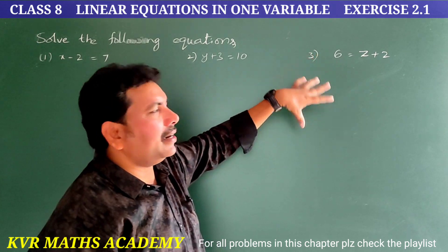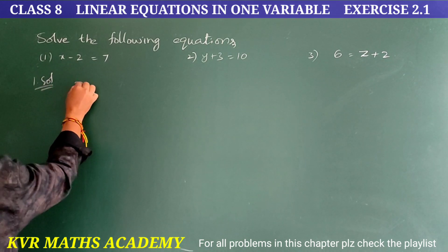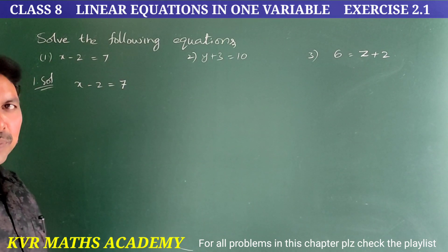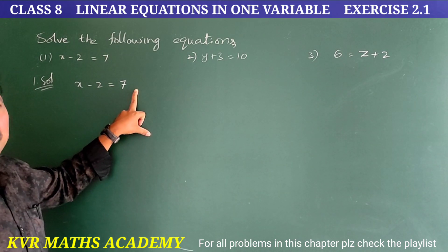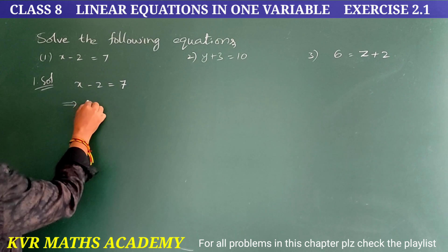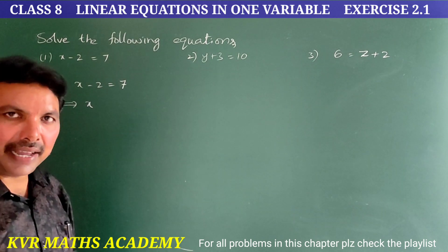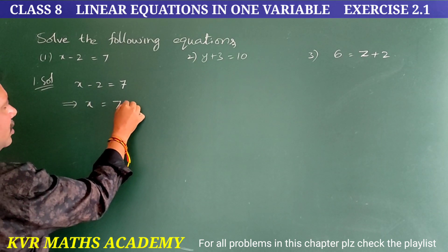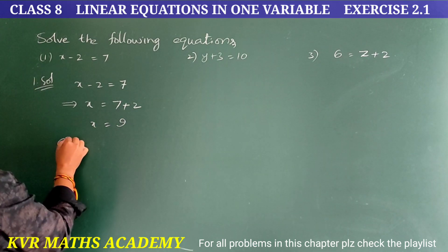First solution. Given: x minus 2 is equal to 7. We'll do these problems by the transposing method. If you transfer minus 2 to the other side, it becomes plus 2. So x is equal to 7 plus 2, which is 9.